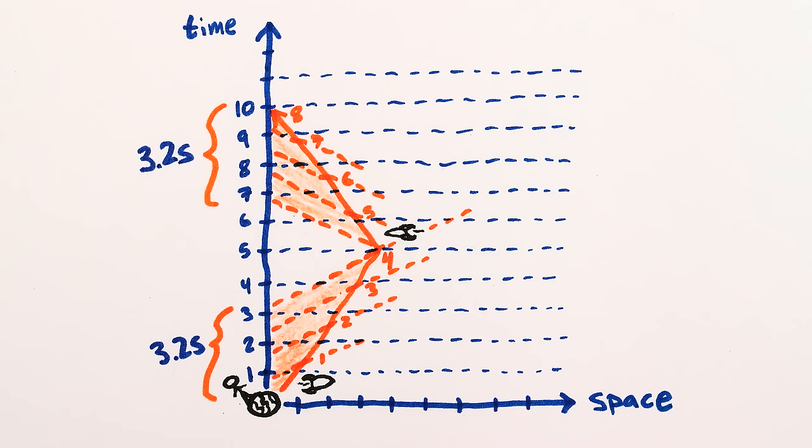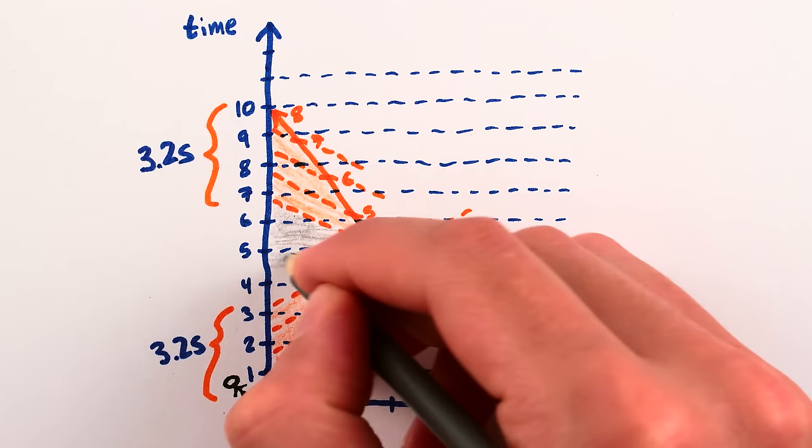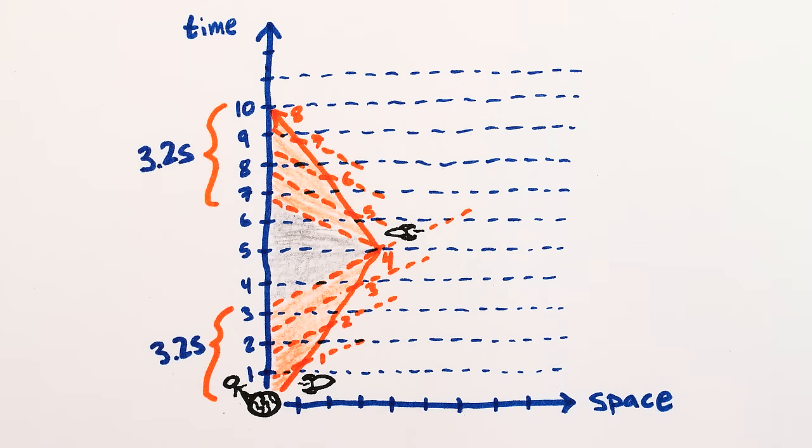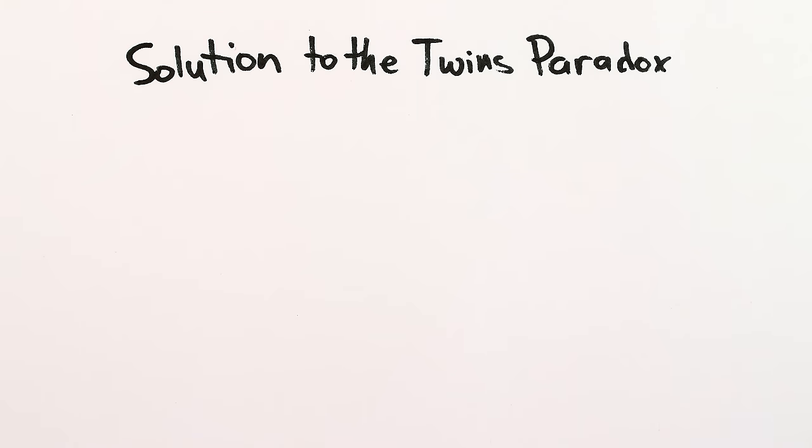Here and here add up to only 6.4 seconds. But because of your change in velocity when you turn around to come home, your notion of time rotates and skips right over a large swath of my time, which amounts to precisely, you guessed it, the missing 3.6 seconds. And this is the resolution to the twins paradox.